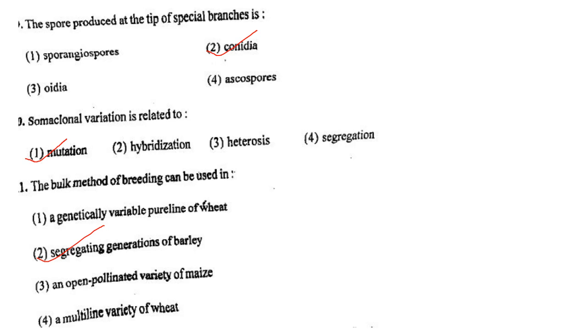Next one: The spore produced at the tip of special branches is option 1, sporangiospore; option 2, conidia; option 3, oidia; option 4, ascospores. Answer is option 2: conidia.